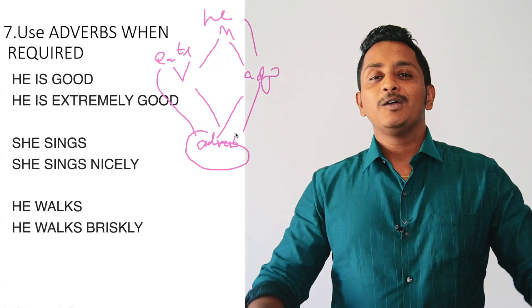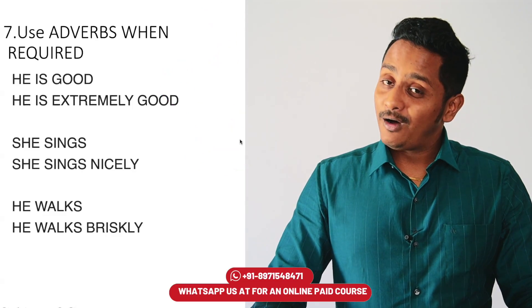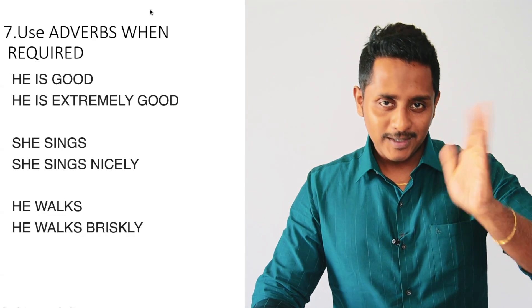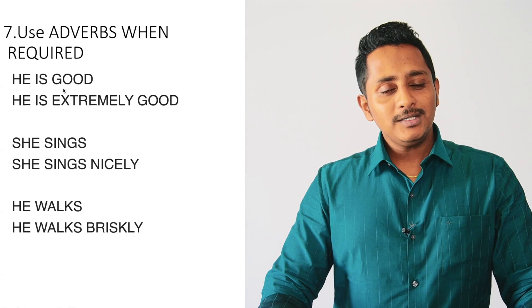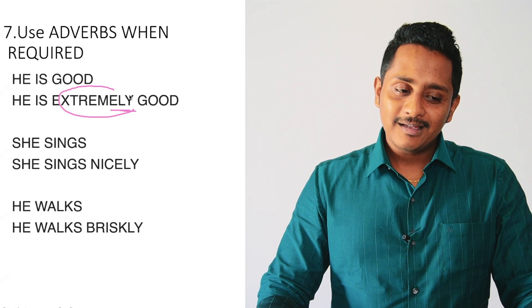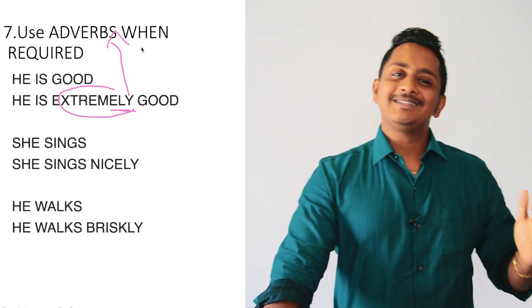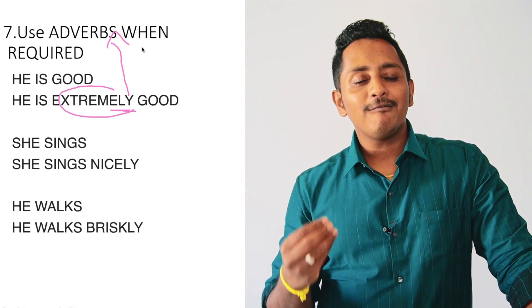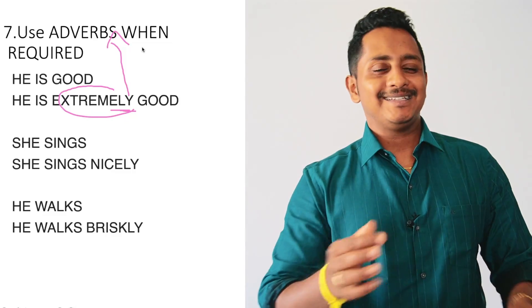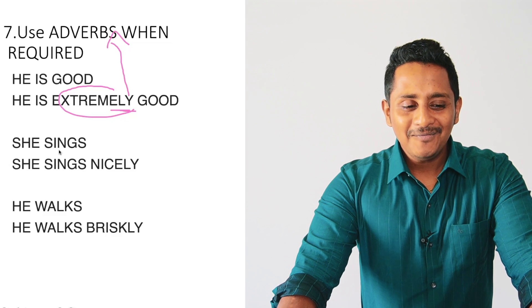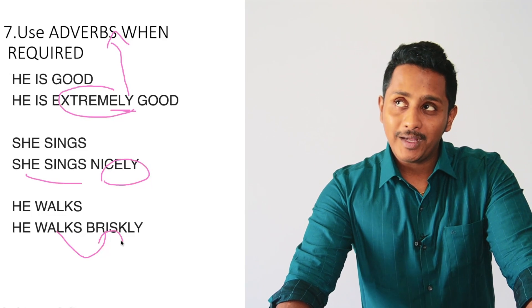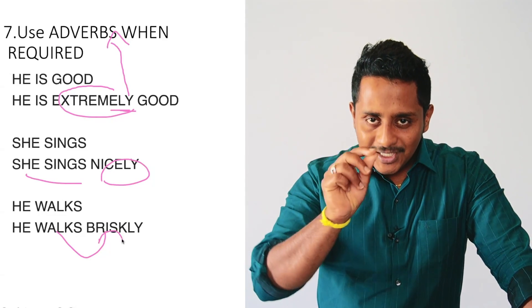For example: 'he eats quickly' — 'quickly' is an adverb describing the verb 'eats.' 'He is extremely good' — 'extremely' is an adverb describing the adjective 'good.' These '-ly' words are adverbs. You need to use them to showcase the knowledge you have — otherwise the examiner won't know what you know. 'She sings nicely,' 'he walks briskly,' 'he walks slowly' — all use adverbs.